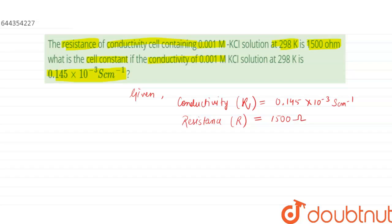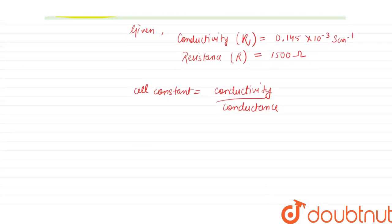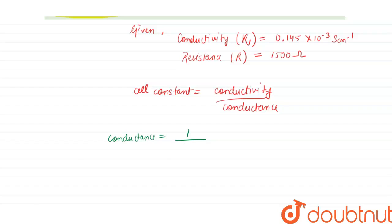Now the formula for cell constant is: cell constant is equals to conductivity upon conductance. And we know that conductance is inverse of resistance, so conductance is equals to 1 by resistance.